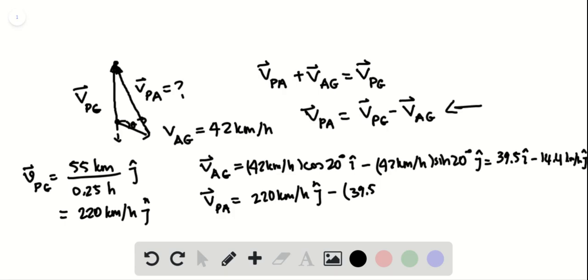Substituting: 220 j-hat minus 39.5 i-hat minus 14.4 j-hat. This gives 220 plus 14.4 kilometers per hour in the j-hat direction, minus 39.5 kilometers per hour in the i-hat direction.